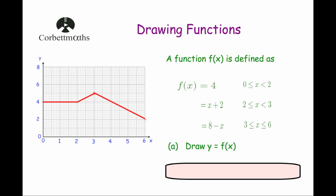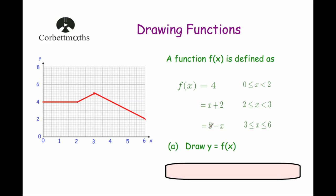So we have our flat line f of x equals 4 from 0 to 2, then our next section x plus 2 with a gradient of 1 going upward to the point 5, and then our last section 8 subtract x with a negative gradient going down to reach the point 2. That's part a — draw f of x — which we have done.